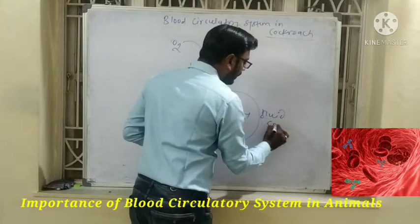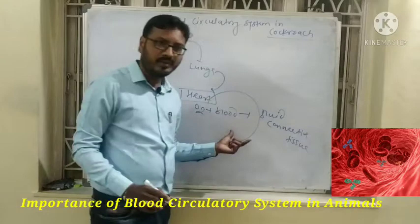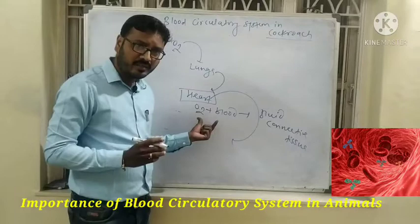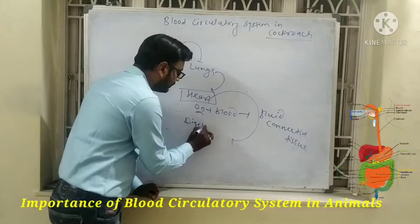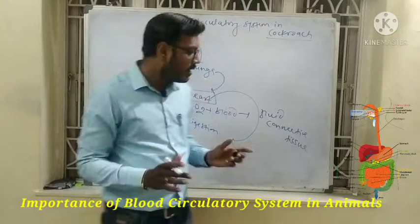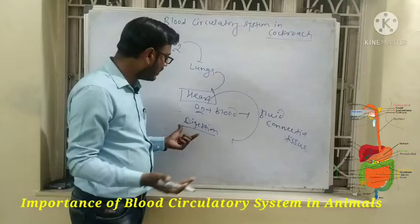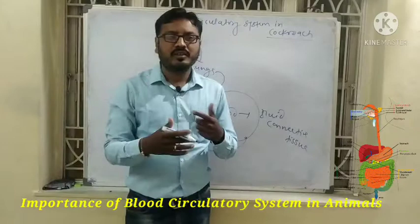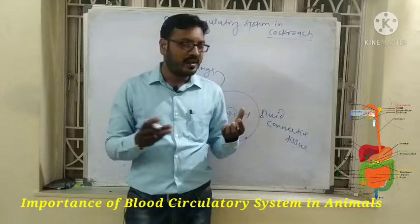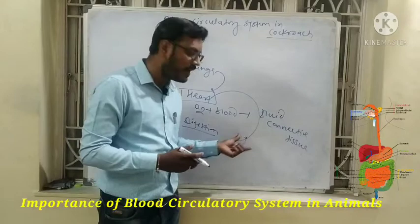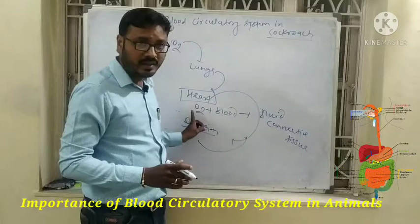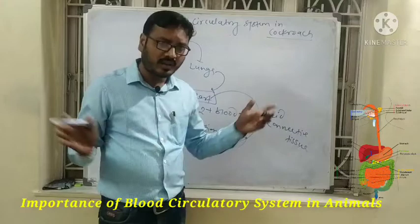Blood is called a fluid connective tissue because it connects to the different parts of our body. After digestion, the digestive system carries out digestion and these digested nutrients mix into the blood. Essential components absorbed from digestion enter the bloodstream.